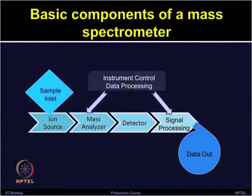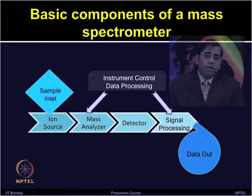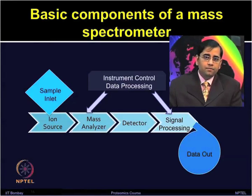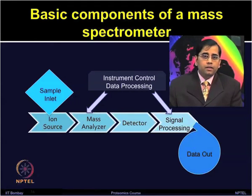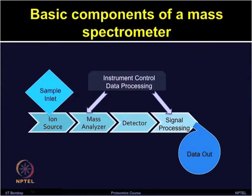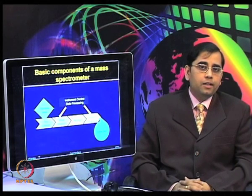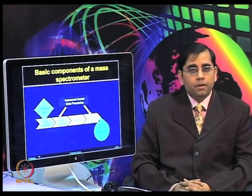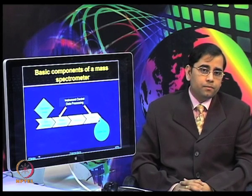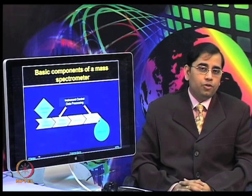The sample inlet transfers a sample into the ionization source. The ion source or ionization source converts neutral sample molecules into gas phase ions. The mass analyzer separates and analyzes the mass of ionic species. There are various types of mass analyzers, which we will discuss in more detail later. A very low vacuum pressure is maintained inside the mass spectrometer. The detector measures and amplifies the ion current of mass-resolved ions, and electronics are needed to control the operation of various units.